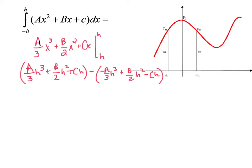Okay, let's get rid of the parentheses. We've got a over 3 x cubed plus b over 2 x squared plus cx h plus a over 3 x cubed minus b over 2 x squared plus cx.